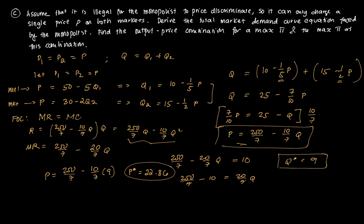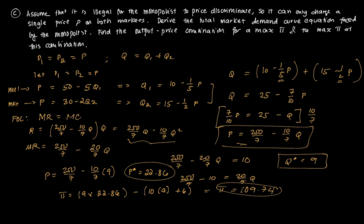Those are the profit-maximizing output and price under a single price. The maximum profit equals revenue minus cost: 9 times 22.86 minus (10 times 9 plus 6), giving a profit equal to 109.74.